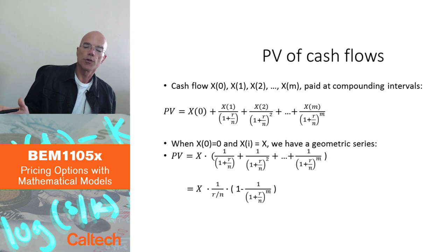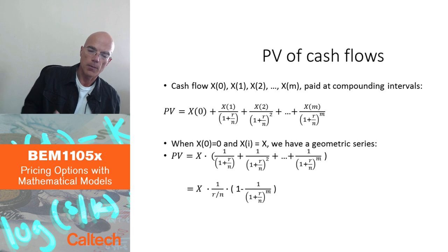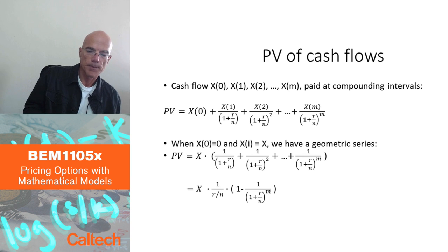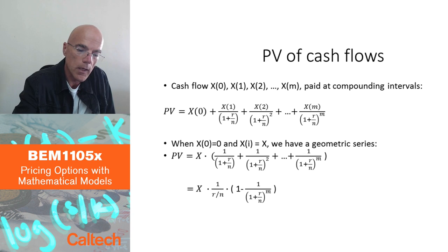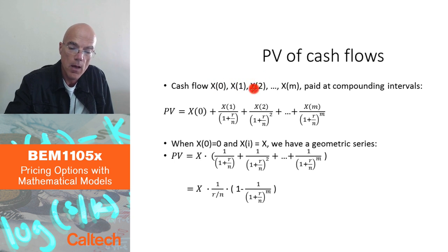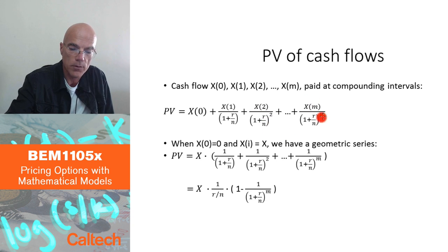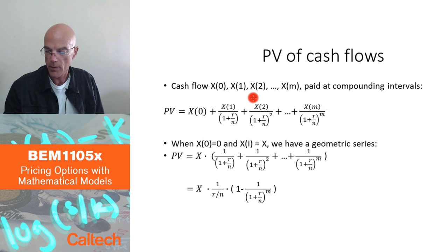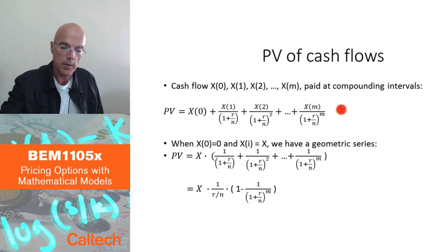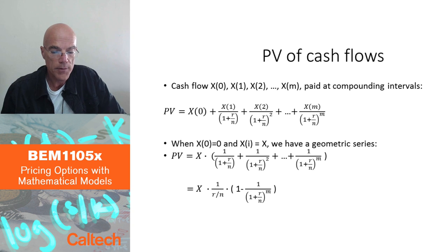It's straightforward to extend this to the present value of a sequence of payments, called a cash flow. If I have payments X(0) today, X(1) after one period, X(2) after two periods, up to X(m) after m periods, the present value of the cash flow is simply the sum of the present values of each payment, discounting each one by the appropriate compounding factor for its period.